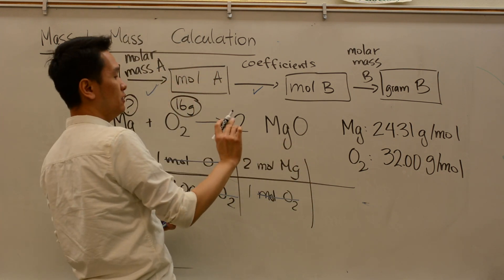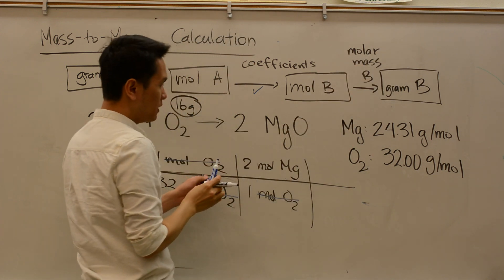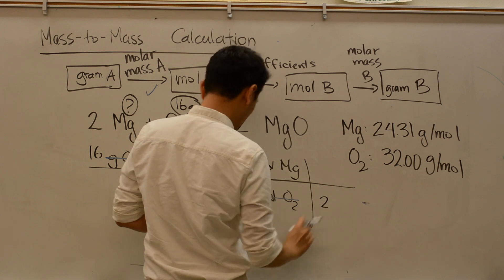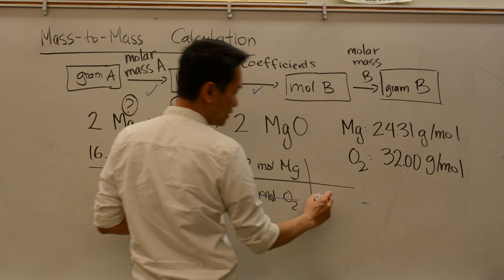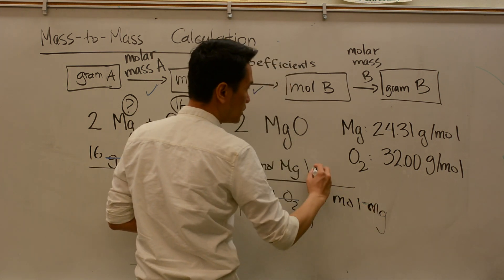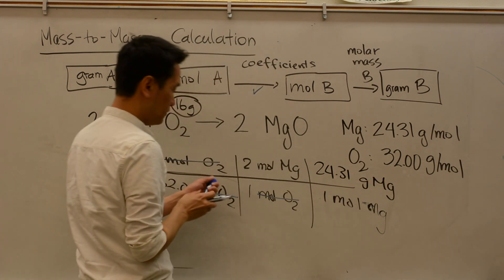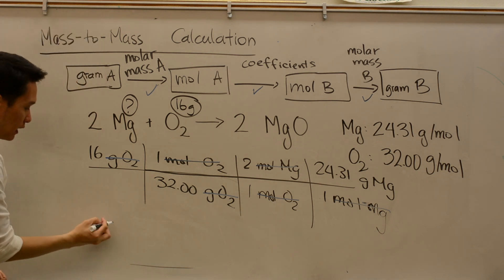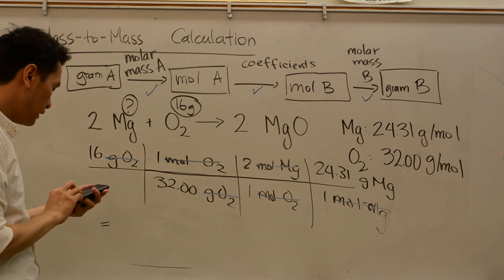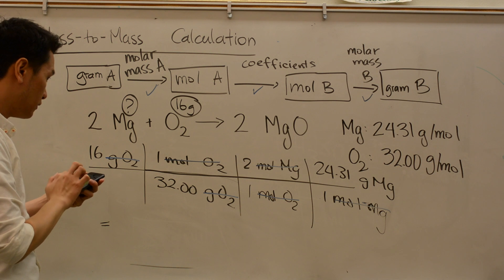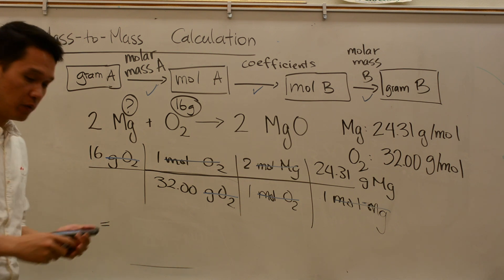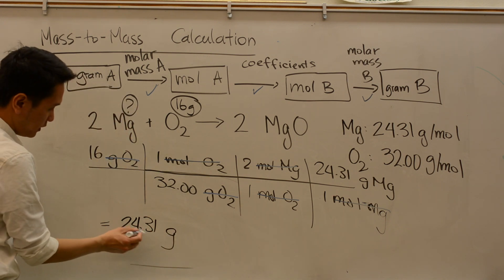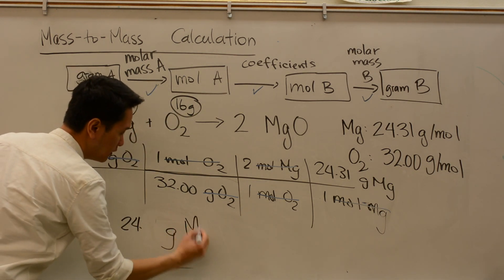Lastly, we go from moles of B to grams of B using the molar mass of magnesium, which is 24.31 grams per mole. Moles of magnesium cancel, giving us grams. Putting it into the calculator: 16 times 2 times 24.31 divided by 32.00 equals 24.31. With only two sig figs, the answer becomes 24 grams of magnesium.